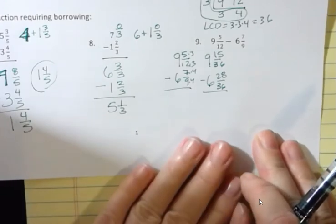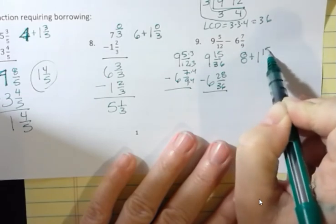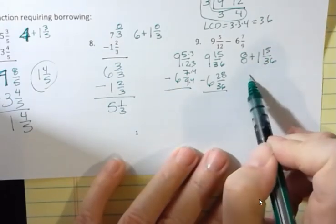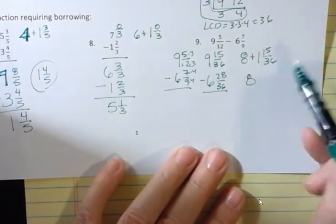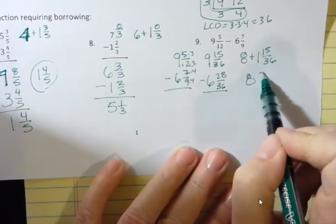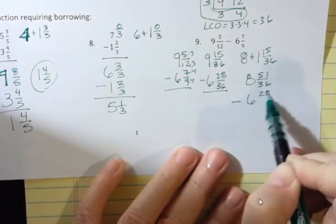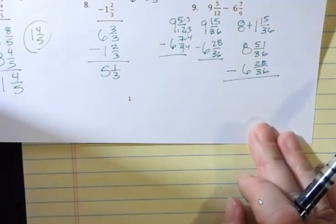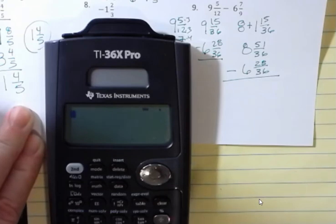Now I want to borrow. I have 9, so I'm going to think of that as 8 plus 1 and 15 over 36. What would that look like? That's 8 and 1 times 36 plus 15 — that's 36 plus 15, which is 51. So I have 51 over 36. If you're not sure about your calculations, you can use a calculator. 1 times 36 is definitely 36, plus 15 is 51.